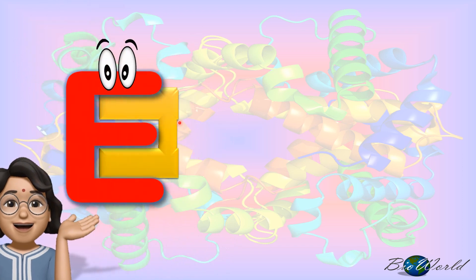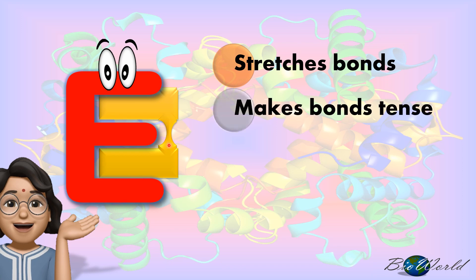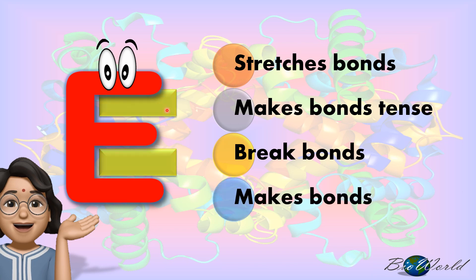Besides that, the flexibility of the enzyme can cause the bonds in the substrate to become stretched. Once stretched, the bonds become tense and easily break. Once the bonds are broken, new bonds are formed to produce a product.